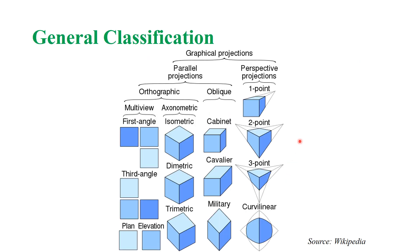Let us see about the general classification of projections. Usually they are called parallel projection and perspective projection. In parallel projection there are two categories: orthographic and oblique. In orthographic there are multi-views and axonometric views. In axonometric views you have different categories like isometric, diametric, and trimetric. The common types used are orthographic and isometric views.